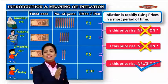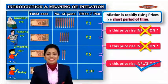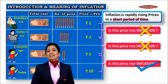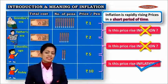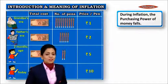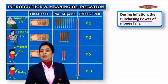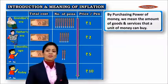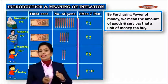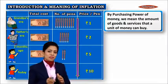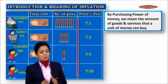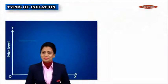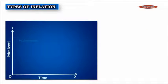Inflation is rapidly rising prices in a short period of time. Whenever prices are rising in a short period of time, we call it inflation — and generally in economics, it is a period of one year of price rise. During inflation, the purchasing power of money falls. Purchasing power is the amount of goods and services that a unit of money can buy. Two months ago the little boy with his 10-rupee note could buy two pens, but today the same 10-rupee note fetched him only one pen — meaning the purchasing power of money has fallen.